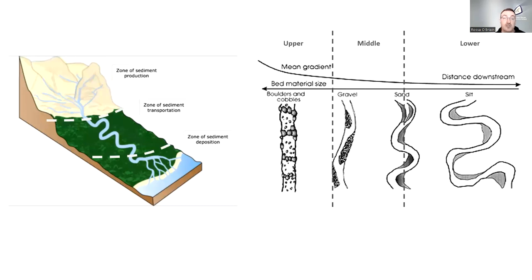There are three fundamental hydrogeomorphic processes: sediment erosion, sediment transport, and sediment deposition. As water flows downstream, it shapes the river landscape through these processes. One classical idealized sediment transport model divides the catchment into three zones: an upper production zone in the headwaters, a middle transportation zone, and a lower deposition zone. In the headwaters, steep slopes cause material to erode and carry downstream; gravels drop out in the transportation zone and finer material is washed further into the deposition zone.